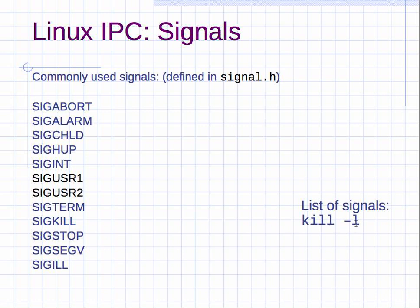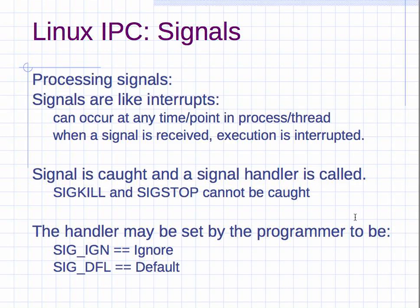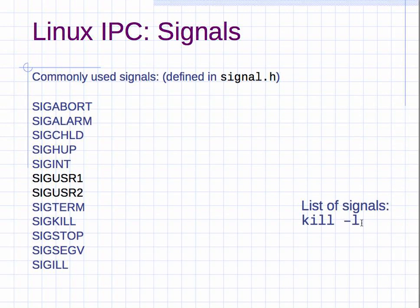You can see the list of signals by using kill -l. I think it's either -l or -1. Kill -1 will send signal 1, so yeah, it's definitely -l. Kill -l will give you a list of all the signals.